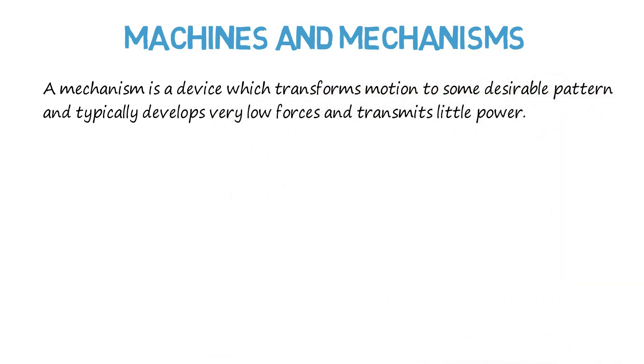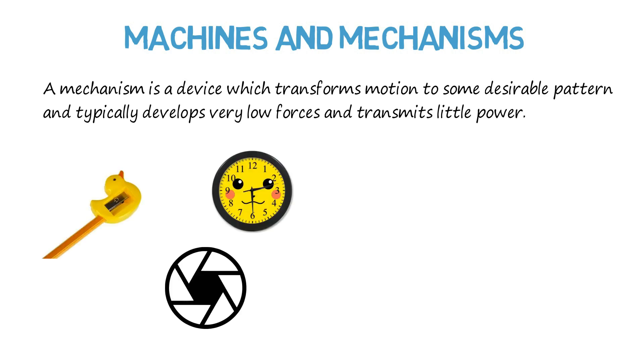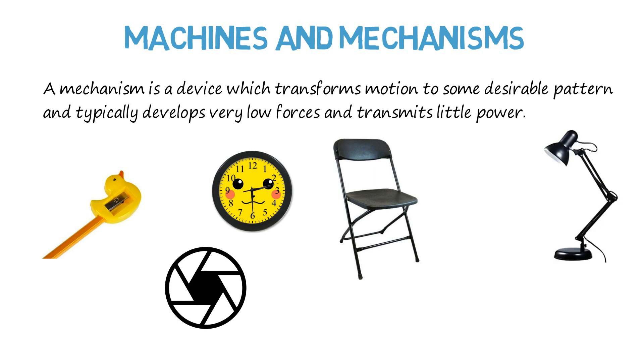Some examples of common mechanisms are a pencil sharpener, a camera shutter, an analog clock, a folding chair, an adjustable desk lamp, and an umbrella.